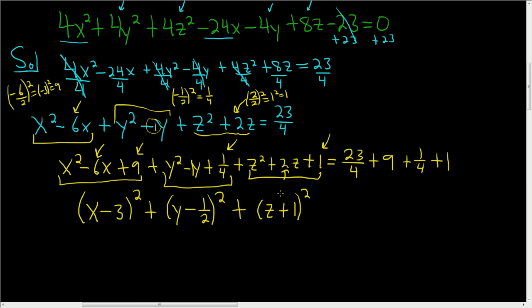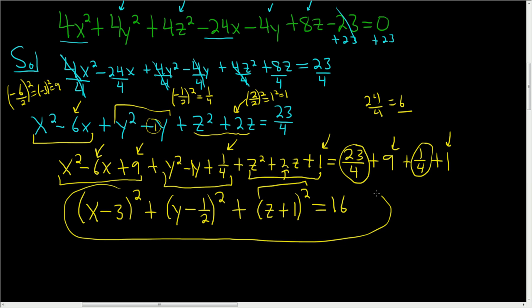So all of this is this. Equals, let's see, 1 fourth plus 23 over 4 is 24 over 4, which is 6. So we've got 6 plus 10, so 16. So that is the equation of the sphere in standard form.